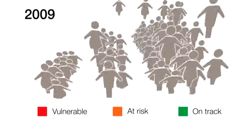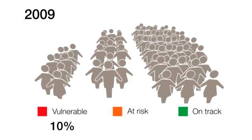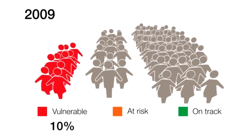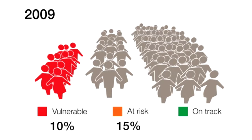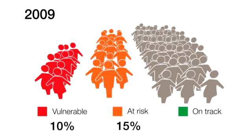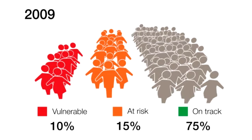Children with scores in the bottom 10% were classified as developmentally vulnerable. Children with scores between the 10th and 25th percentile were classified as developmentally at risk. Children with scores in the top 75% were classified as developmentally on track.